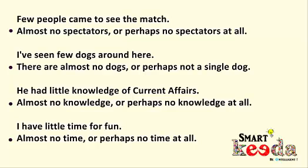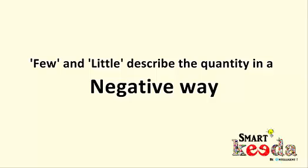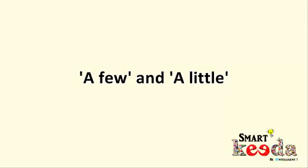Here are some more examples. 'Few people came to see the match' means almost no spectators were there. 'I have seen few dogs around here' suggests there are almost no dogs. 'He had little knowledge of current affairs' suggests the person had no knowledge of current affairs. 'I have little time for fun' means I have almost no time for fun. So 'few' for countable nouns and 'little' for uncountable nouns describe quantity in a negative way — they may indicate a total lack of the noun but are more polite than saying so directly.